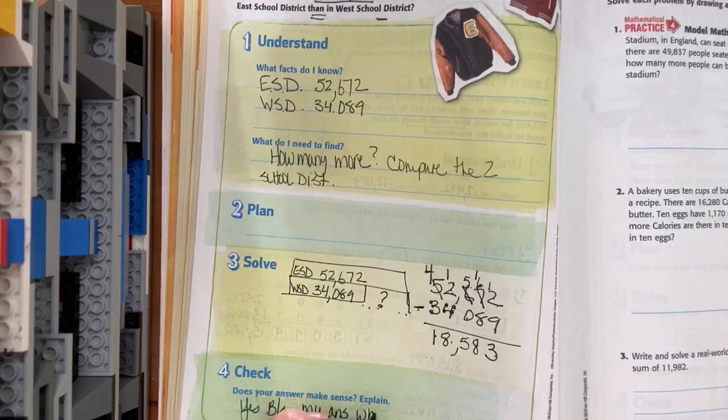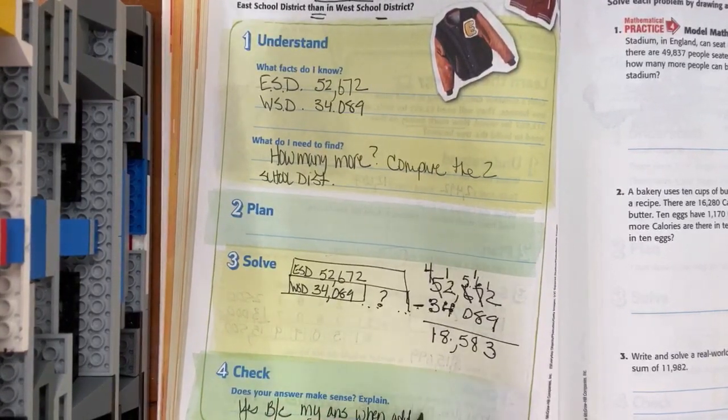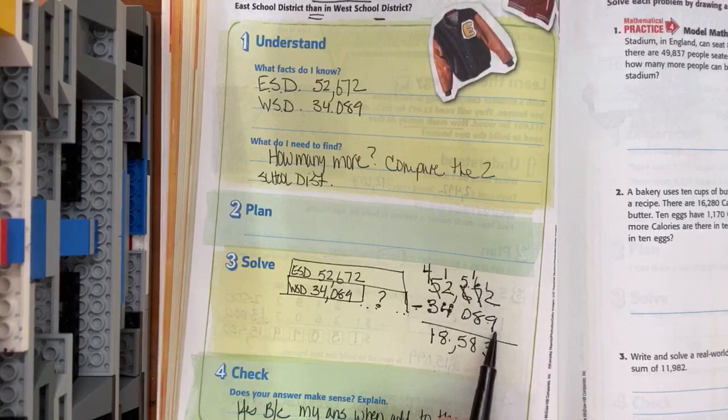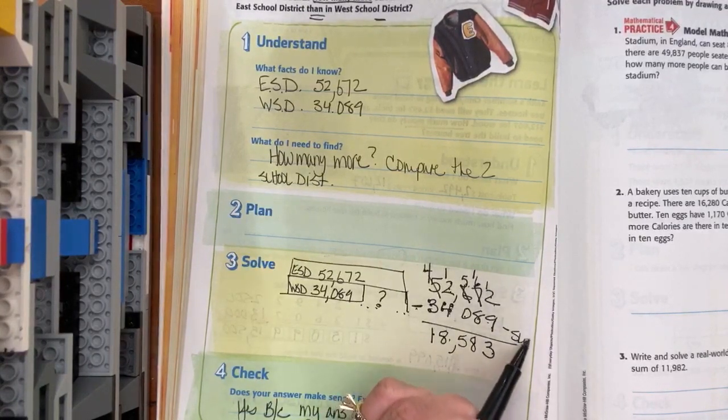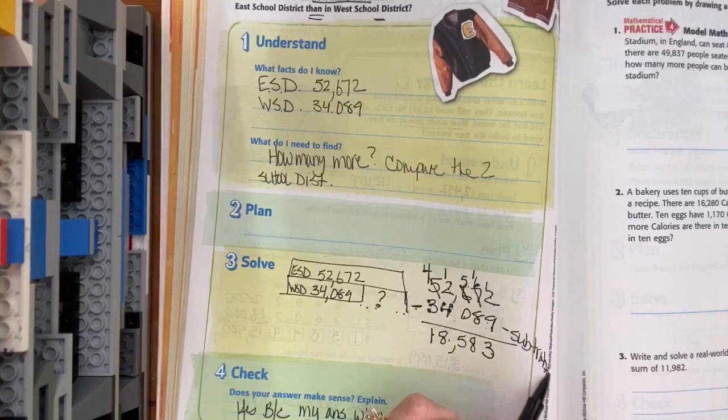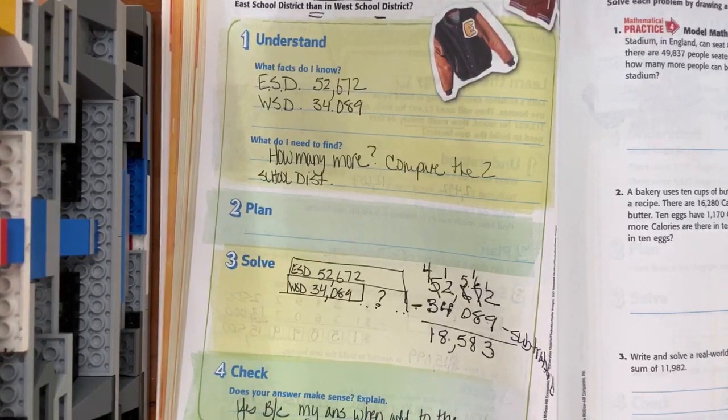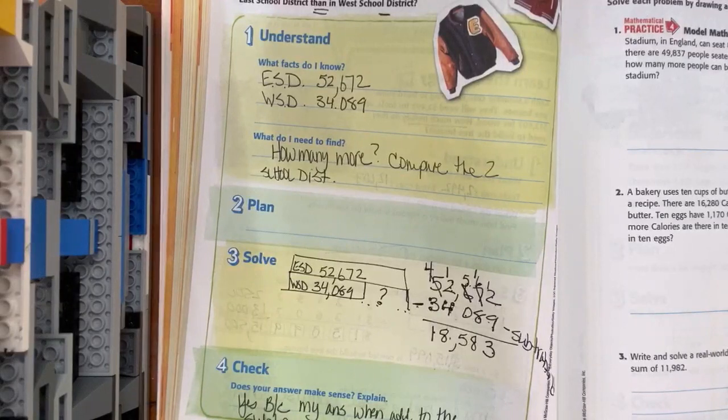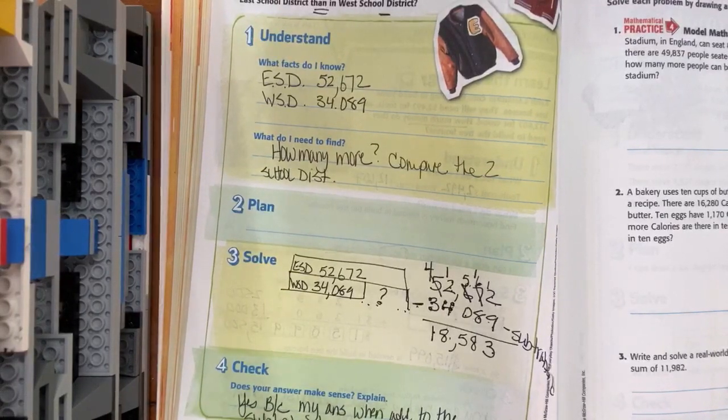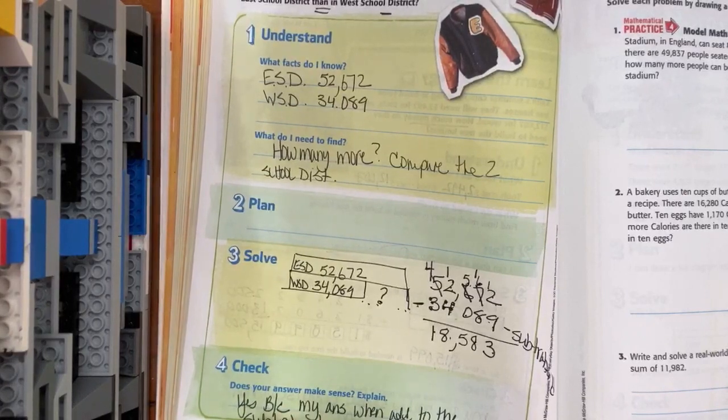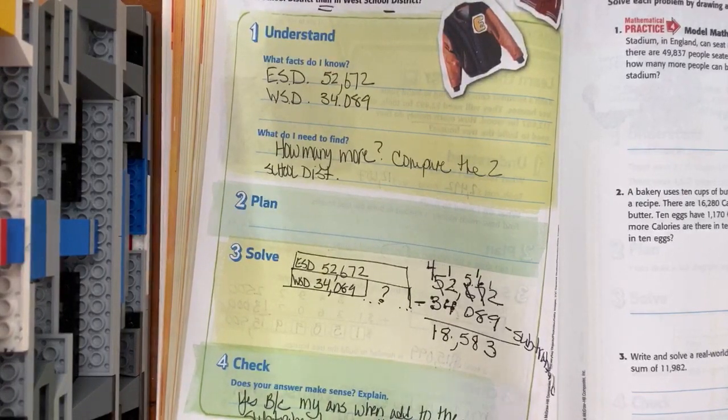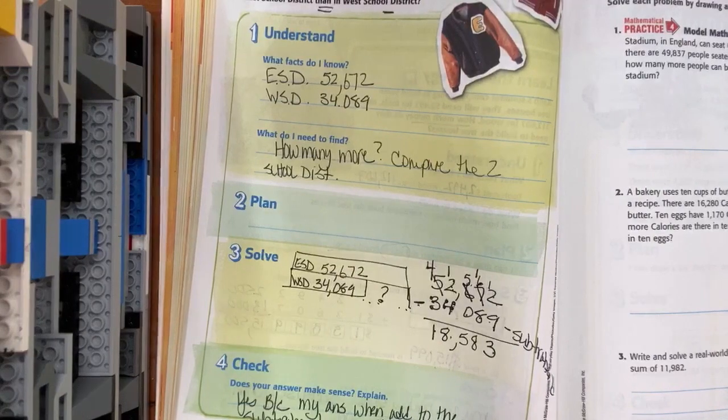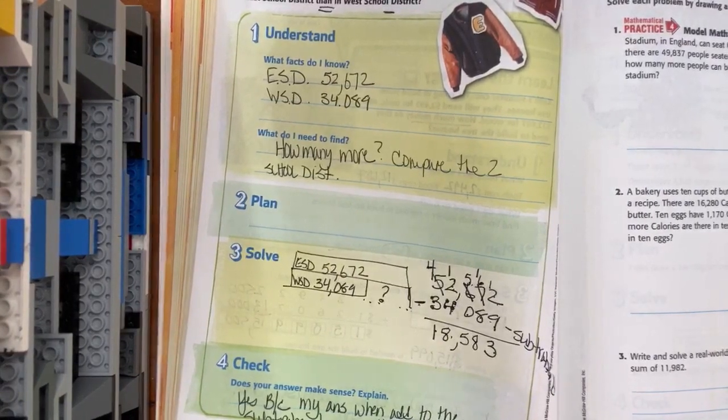When added to the - do you guys remember what this number was called in math academic terms? Remember, they called it the subtrahend. You're probably going to need to know that. So my answer when added to the subtrahend, or the next number, equaled East School District. Does that make sense?